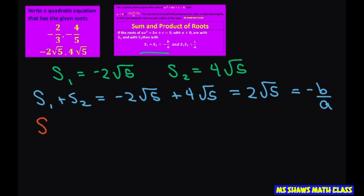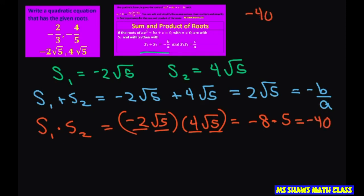Let's do our product. So multiply these two. And that's going to give you negative 2 square root of 5 times 4 square root of 5. Well, this equals negative 8 times square root of 5 times square root of 5 is 5, which is negative 40. Negative 40 equals your c divided by a.